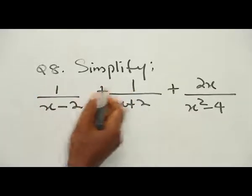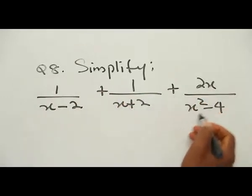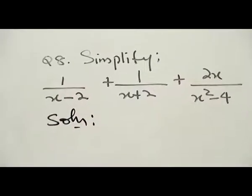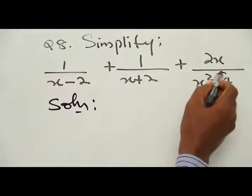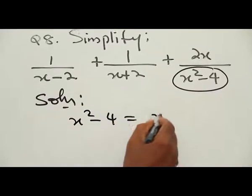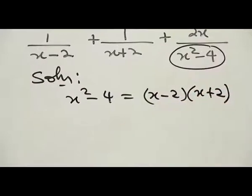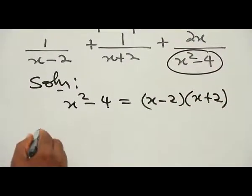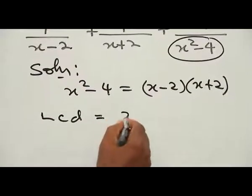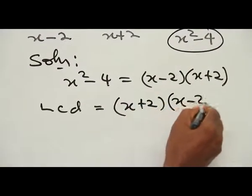Question number 8: Simplify 1 over (S minus 2) plus 1 over (S plus 2) plus 2S over (S squared minus 4). The key observation is that S squared minus 4 is the same as (S minus 2)(S plus 2). Therefore the LCD of this entire fraction will be (S plus 2)(S minus 2).